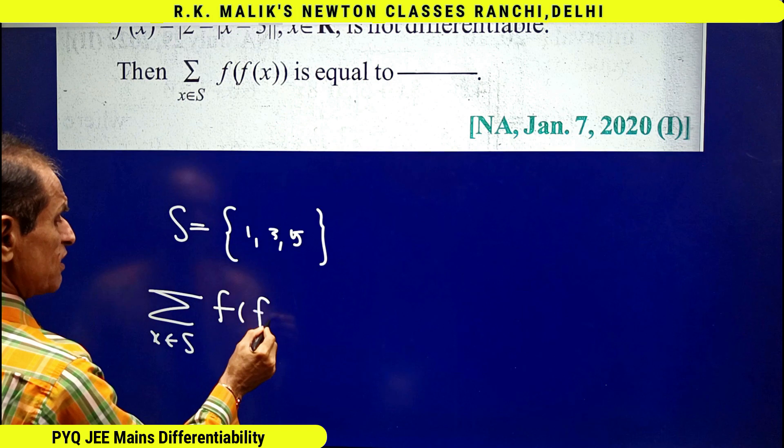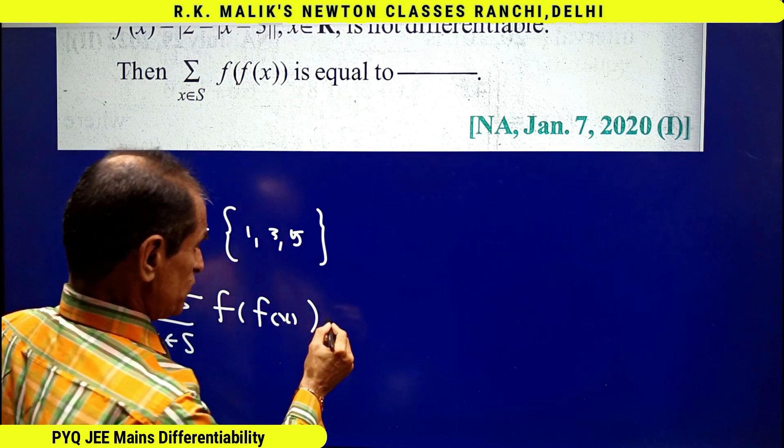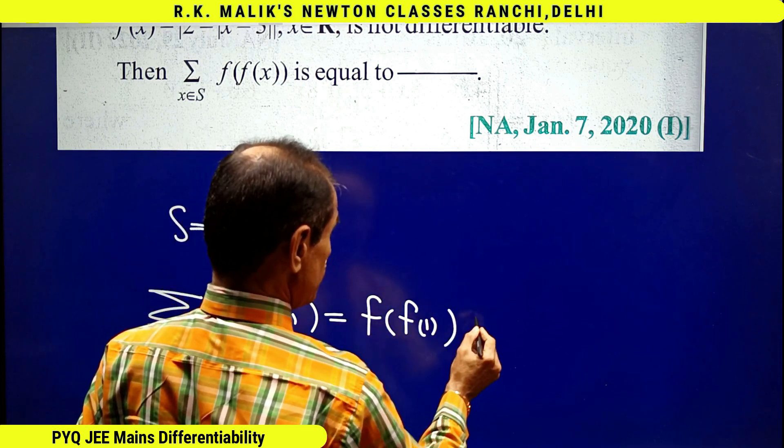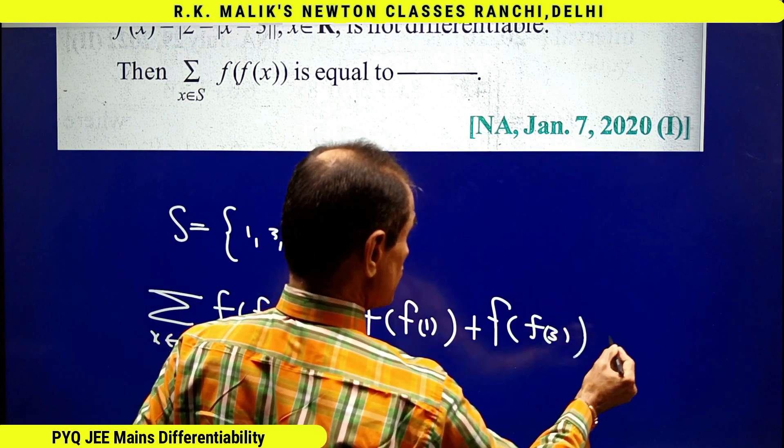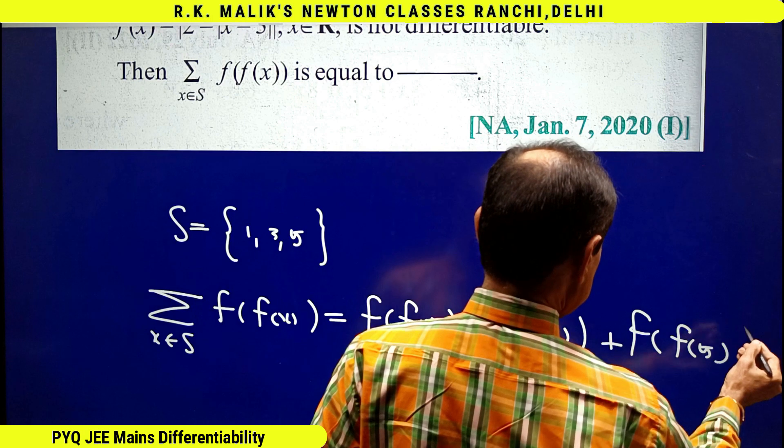That is, we have to find the value of f of f of 1 plus f of f of 3 plus f of f of 5.